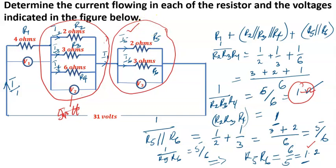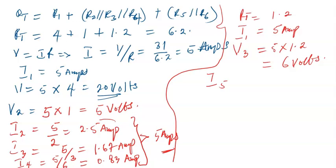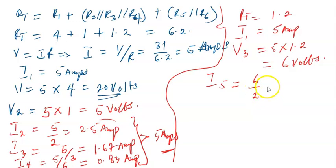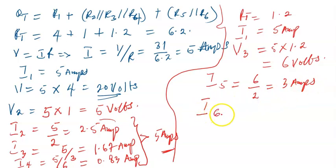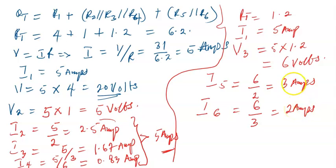I5 is across the 2-ohm resistor, and i6 is across the 3-ohm resistor. So i5 = 6/2 = 3 amps, and i6 = 6/3 = 2 amps. Once again you see that 2 amps + 3 amps sums up to 5 amps, confirming our result.